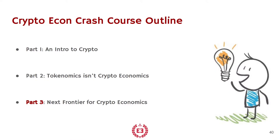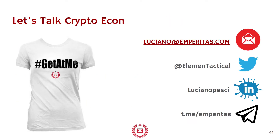Looking back, if you felt lost today and didn't understand the components of a token that go into tokenomics, maybe go back and watch Part 1, the intro to crypto. If you feel like you understand this idea of a monetary and financial focus on the economics of these tokens — that have a governance component, a market component, and humans and machines — then you're ready to move on to Part 3: The Next Frontier for Crypto Economics. I love to talk crypto. You can get ahold of me at any of these four places. If you want a PDF of the slides from today, send me an email. Otherwise, you can reach me on Twitter, LinkedIn, or our Telegram channel. Thank you very much — I will see some of you at Part 3.